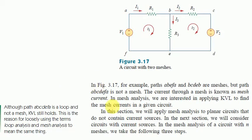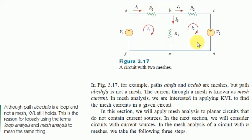This is the second part of lecture 18. In figure 3.17 there is a circuit with two meshes. Mesh number 1 is the path A, B, E, F, A — this is the closed part. The second mesh is B, C, D, E, B. So this circuit has two meshes: ABEFA and BCDEB.